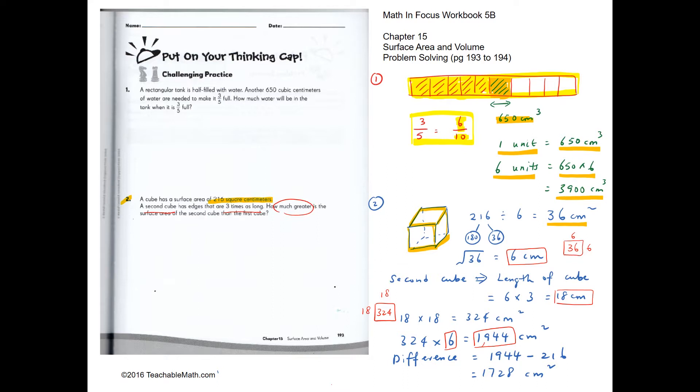What is the difference? The difference would be 1,944 minus 216 which is 1,728.